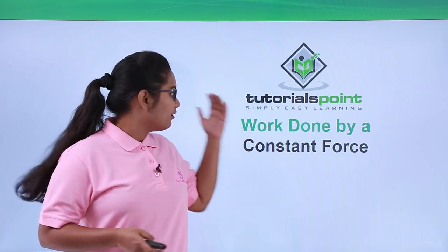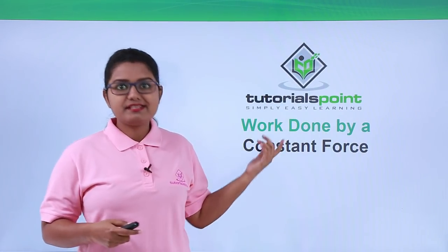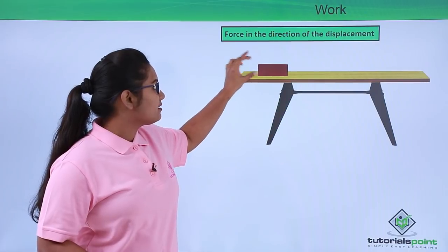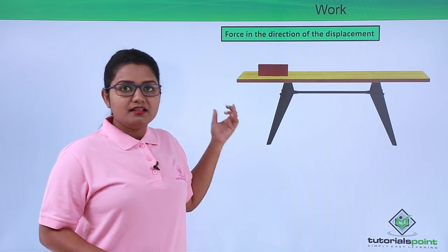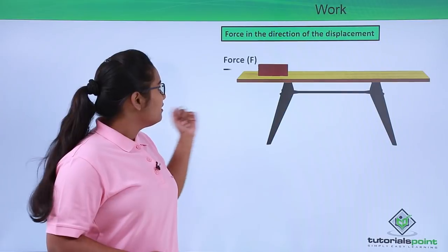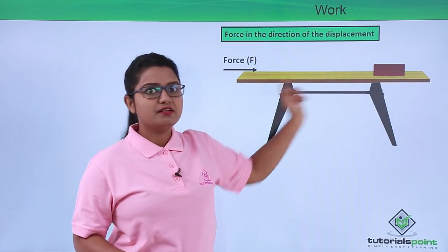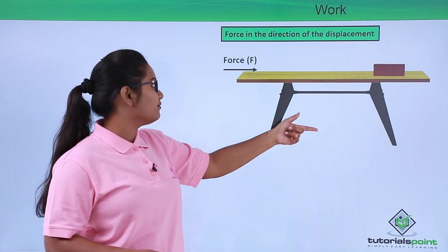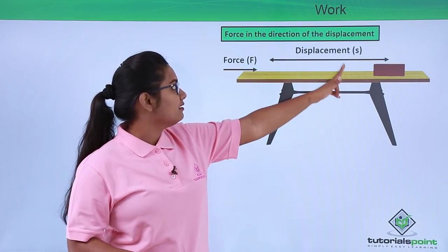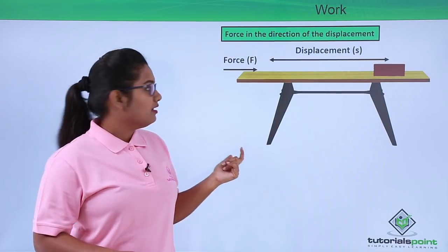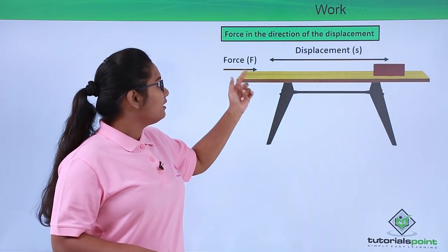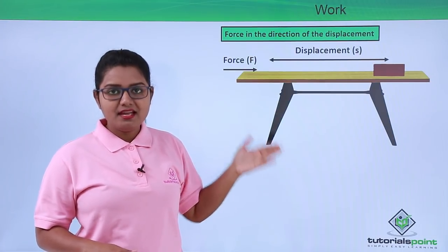In this video we are going to talk about work done by a constant force. We have a table with a block of wood placed on it. We apply a force in the forward direction, and the block moves some distance on the table. The displacement the block covers is denoted by the letter S. The force is in the forward direction and the body has also moved in the forward direction.